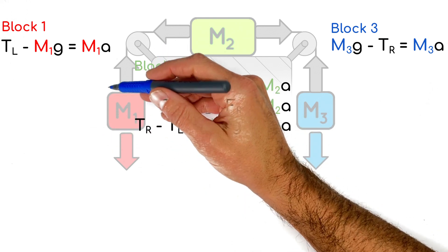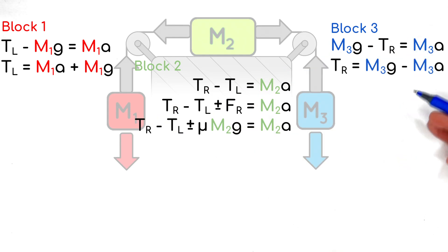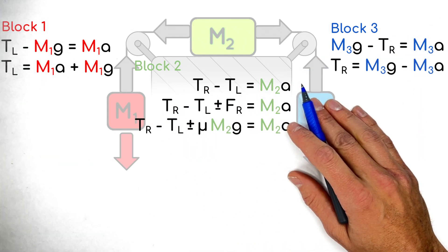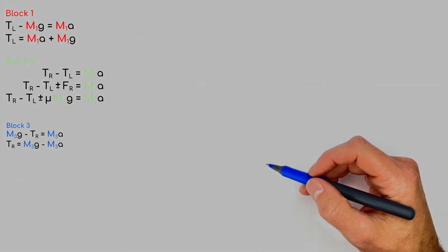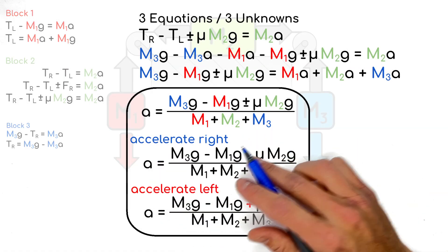And in doing that, we get an equation for the acceleration of this system as a function of the masses and mu.